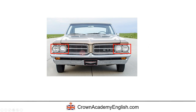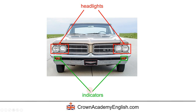In red, these are called the headlights. And in green, these small orange lights in the front of the car and also at the back of the car, they are called indicators. So this is the left indicator and this is the right indicator.